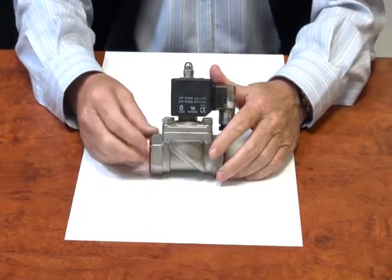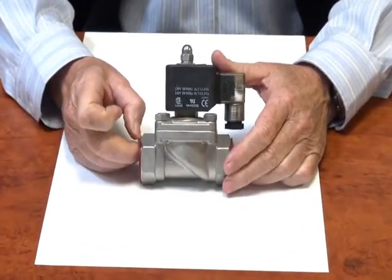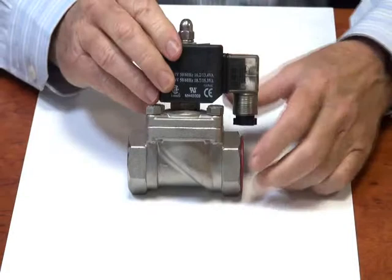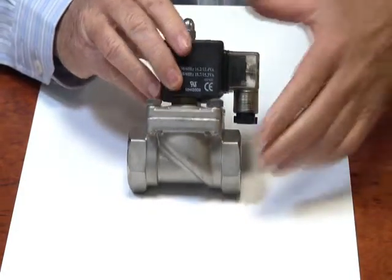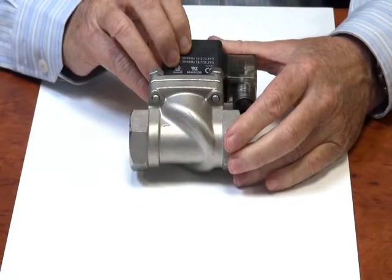S55 series valves are available from quarter inch to two inch BSP. They are a 316 stainless steel body valve with a Viton seat.